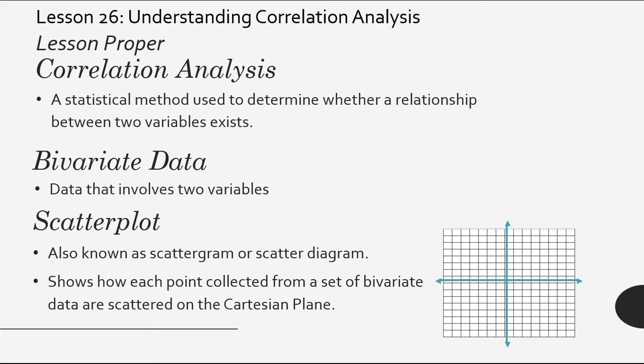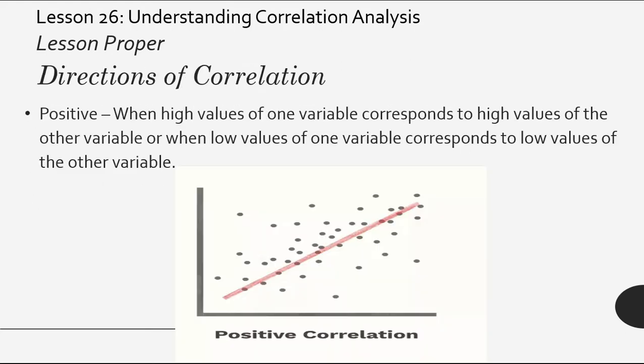How about the scatter plot? The scatter plot is also known as the scattergram or scatter diagram. It shows how each point collected from a set of bivariate data are scattered on a Cartesian plane. So, if probability distribution has a histogram, correlation analysis has a scatter plot. This is the graphical representation of data when it comes to correlation analysis.